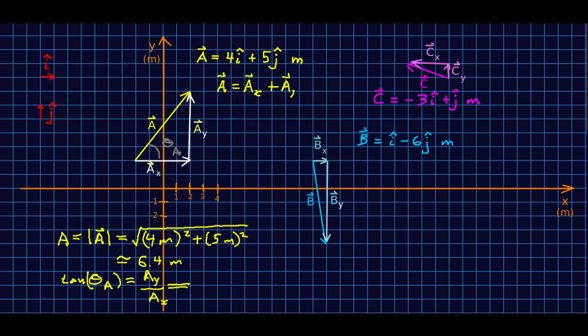And so that tells us that we can find theta a just from the inverse tan of a y over a x. And so that's 5 over 4 where those are both in meters so the meters are going to cancel and I don't need to worry about them. And that's about 51.3 degrees.